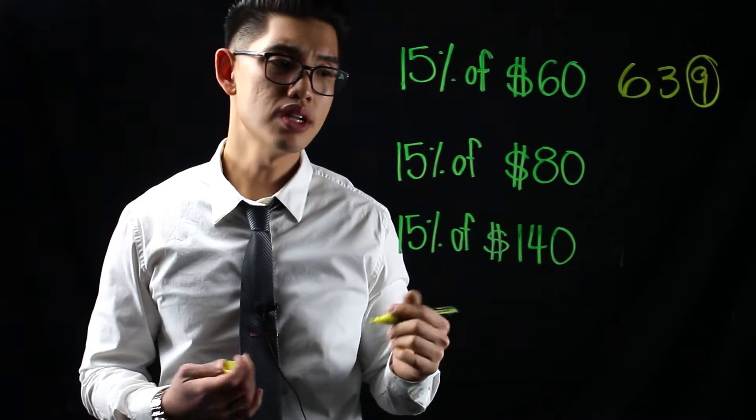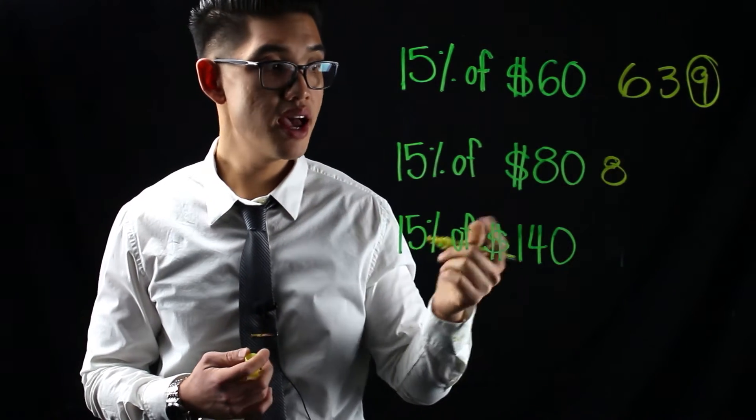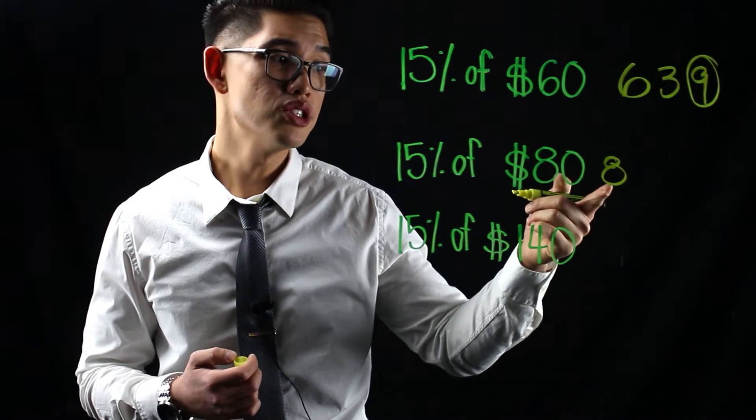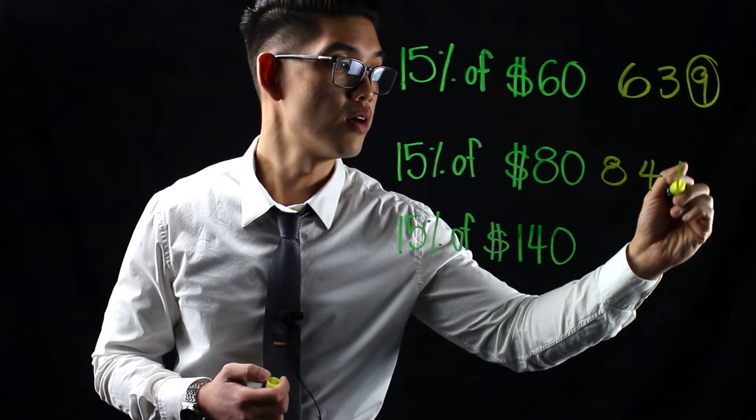15% of 80, we're going to do the same thing. 10% of 80 is just going to be 8. And if I want to find 5% of 80, it's just going to be half of that. So that's going to be 4. Add these two numbers together, that's going to give you $12.